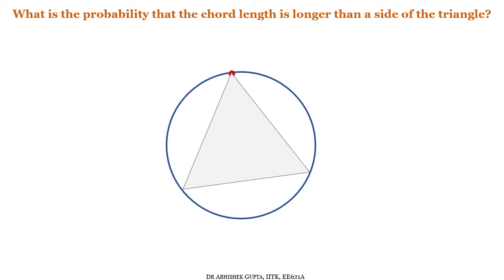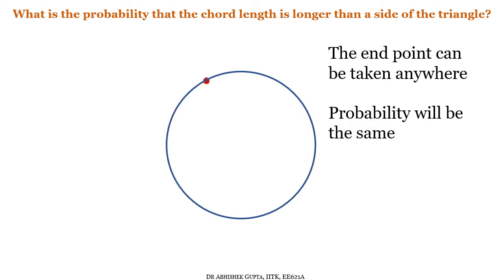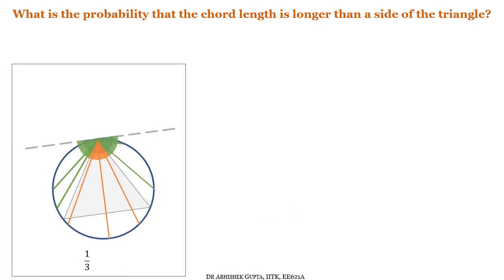Recall that we fixed the endpoint at the corner of the triangle. If we take the endpoint at some other location, this is not going to change anything because we can just rotate the triangle — the triangle side length remains the same. Similarly, we can take this endpoint anywhere on the circle and the probability will always be 1/3. So by Approach 1, the probability of selecting a chord longer than the side of the triangle is 1/3.